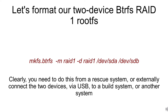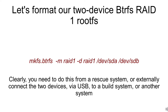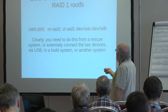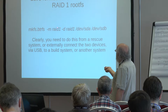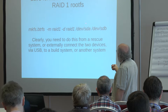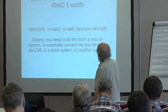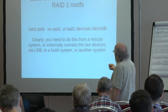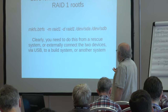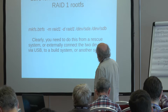RAID 1 as a root file system — this is what I'm going to run through. Once you've got everything in place, run this command: mkfs.btrfs, where -m sets metadata as RAID 1, -d sets data as RAID 1, followed by your two devices. That's all you need to do. You'd do this from a rescue system or by connecting the two devices via USB to a build system, since you have to set that up before you can boot into it.